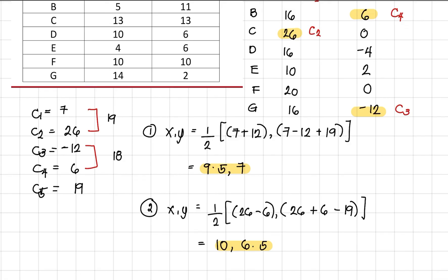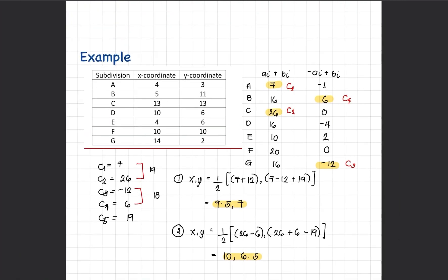That's the answer for the minimax model. Just in case you were asked to solve for the optimal location connecting the line segment using minimax location model, you have a set of answers which is 9.5 and 7 for the first point, and the second point is 10 and 6.5. These are both location points in the coordinate plane. That's the discussion for this video, and I will see you on the next one. Bye!